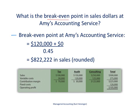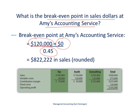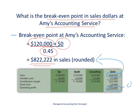Now we have everything we need to find the break-even point in sales dollars for this accounting firm. The formula is total fixed costs plus target profit — zero for a break-even point — divided by the weighted average contribution margin ratio of 45%. Running the numbers, this company needs sales of $822,222 to break even. Anything above that in sales means profit; anything below that means losses.